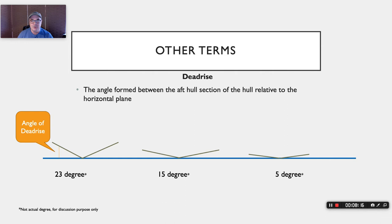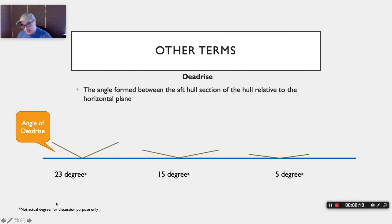Deadrise: in my last video I did a whiteboard version of what deadrise is. Let me give a better schematic here. Deadrise is the measurement of the angle of the aft section of the boat's hull relative to the horizontal. As you can see in the diagram, the degrees shown are representative, not exact — just for reference. A 23-degree deadrise is fairly steep, a 15-degree deadrise is fairly modest, and 5 degrees or less is pretty much flat. It's the angle of the bottom of the hull relative to the horizontal plane.